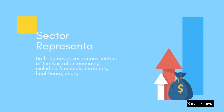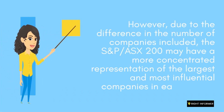Sector Representation: Both indices cover various sectors of the Australian economy, including financials, materials, healthcare, energy, consumer discretionary, and more. However, due to the difference in the number of companies included, the S&P/ASX 200 may have a more concentrated representation of the largest and most influential companies in each sector.